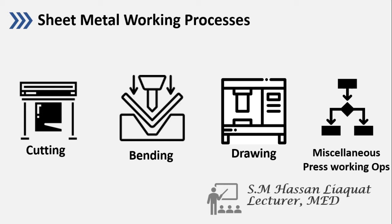Auzhu Billahi Minash Shaitan Al-Rajim, Bismillahir Rahmanir Raheem. Assalamu alaikum wa rahmatullah. Welcome to the third lecture of week 7. In this week we are discussing Chapter 20, which is sheet metal working. In the last lectures we discussed the first type of sheet metal process — sheet metal cutting, which includes blanking and punching. In this lecture we are going to discuss the second type, which is known as sheet metal bending.